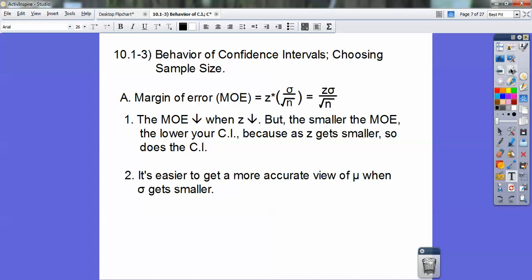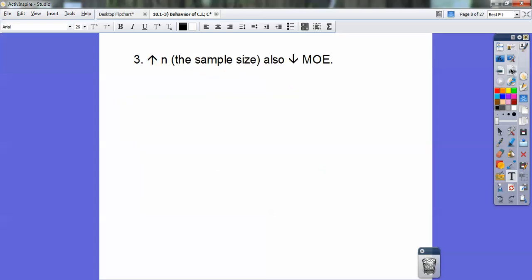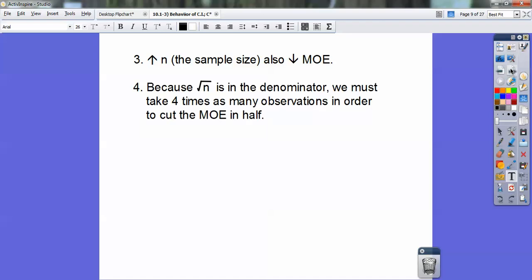It's easier to get a more accurate view of your population mean when the standard deviation gets smaller. Increasing n, the sample size, also decreases your margin of error.